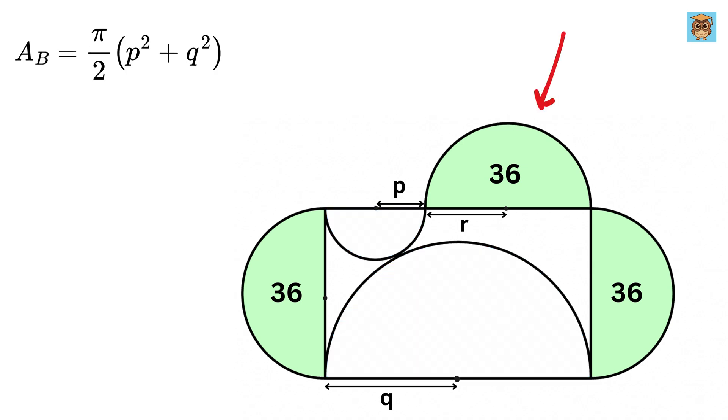Now, the area of this semicircle will be π R² over 2, but it is also equal to 36 square units. So, we have π times R² equals 36 times 2, or 72. Nice!